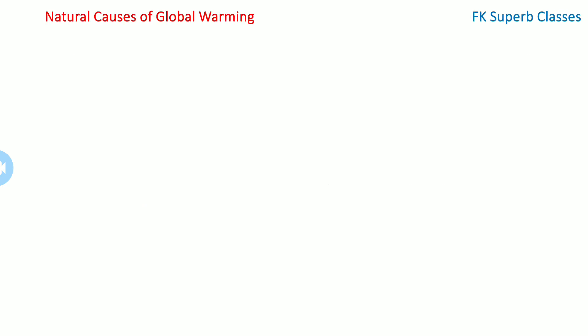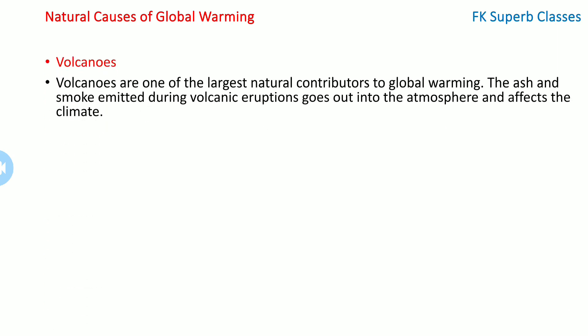Now, natural causes of global warming. Volcanoes are one of the largest natural contributors to global warming. The ash and smoke emitted during a volcanic eruption goes into the atmosphere and affects the climate.